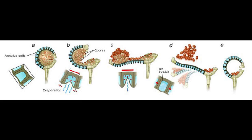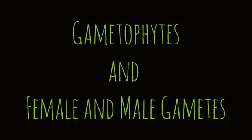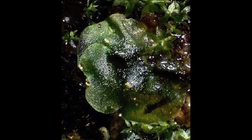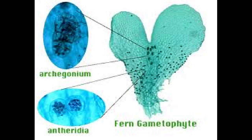After going through meiosis, the sporangia break open, releasing the spores inside and becoming haploids. Under the right conditions, the spores will germinate into bisexual gametophytes. Each gametophyte contains female gametes as eggs inside the archegonia, and male gametes as sperm inside the antheridia.